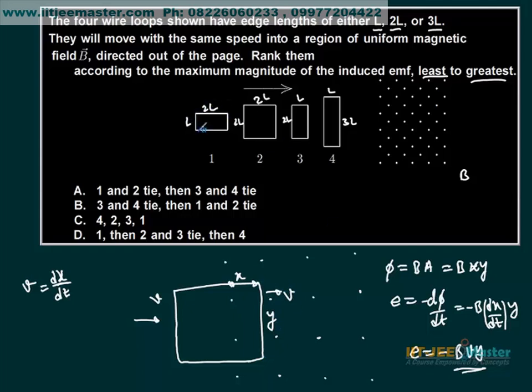So least is the first case. Cases 2 and 3 will tie, and 4 is the greatest because it is 3L. So the answer is D: 1, then 2 and 3 tie, and then 4.